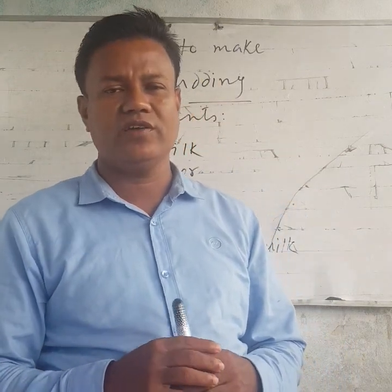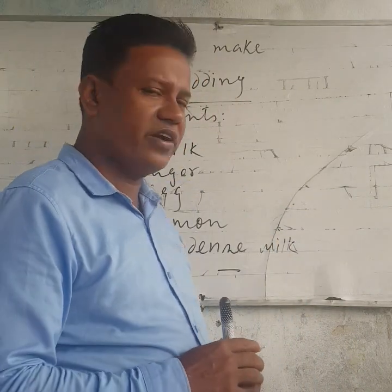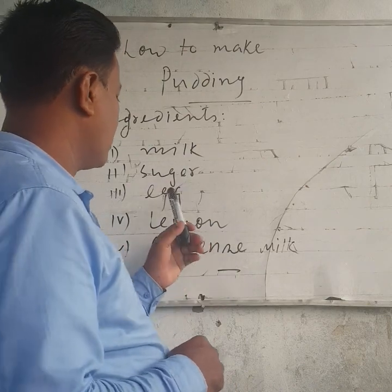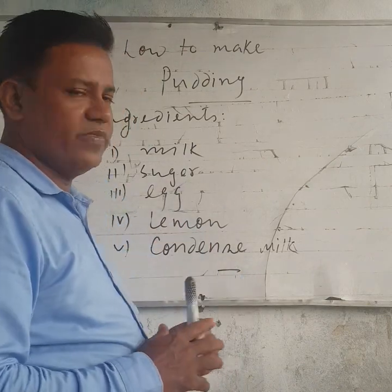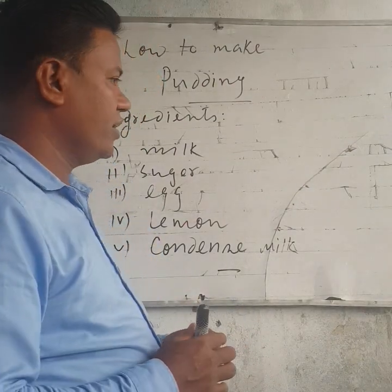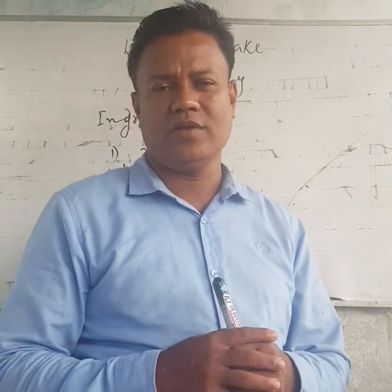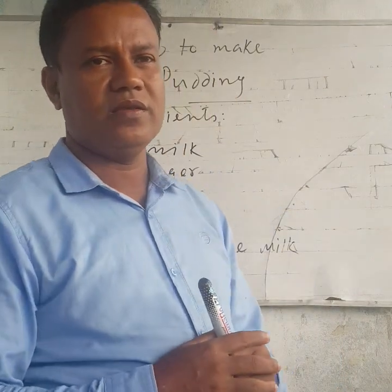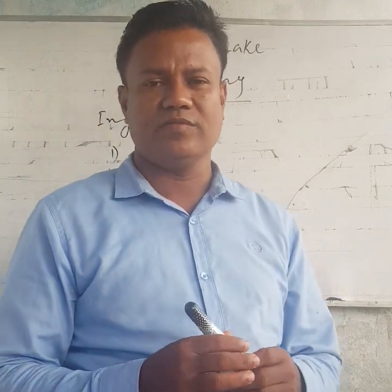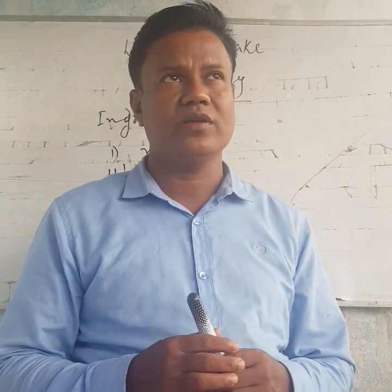First, you have to write in Bengali how to make pudding. The ingredients of pudding are: milk, sugar, egg, lemon, and condensed milk. First, you have to prepare the sauce ingredient. After that, you know how to proceed. Then step by step you have to write the answer, and finally it will become a complete answer.